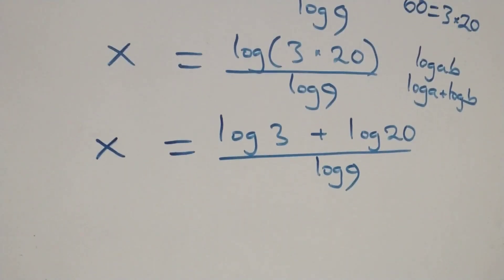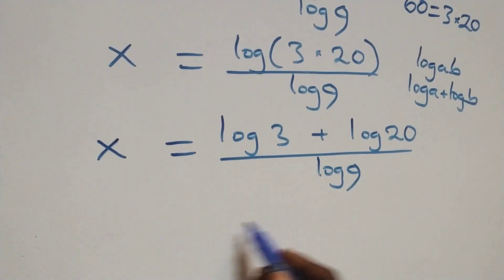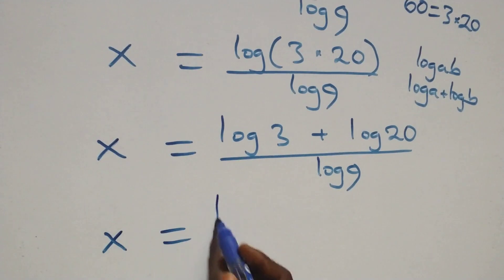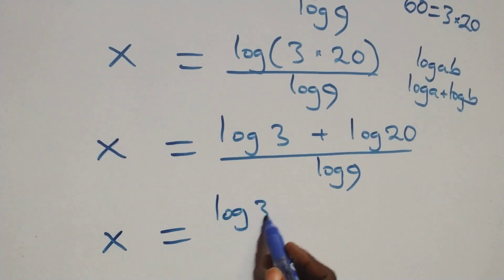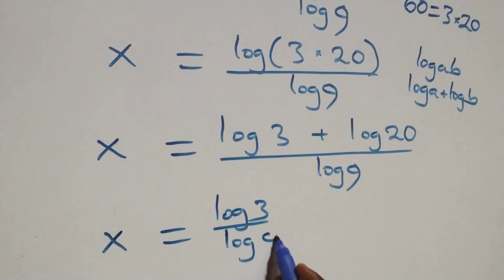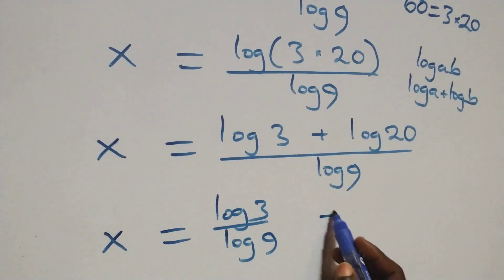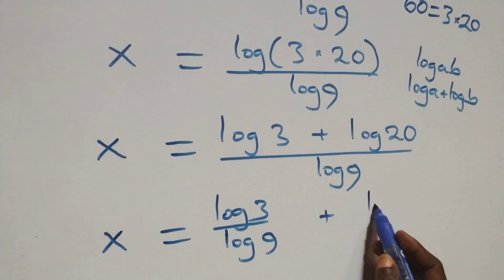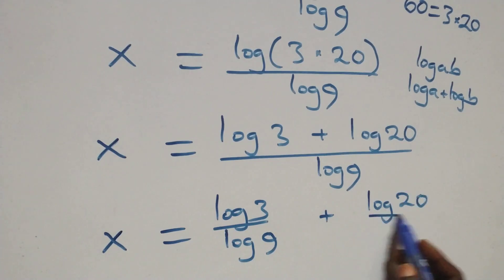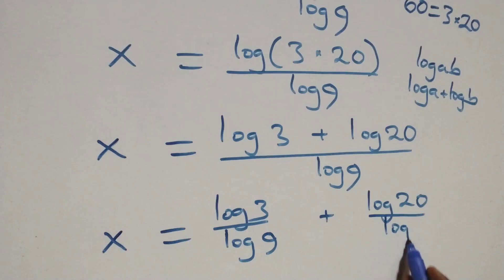At this point, we separate this into two fractions. We have x equals to log 3 over log 9, plus log 20 over log 9.